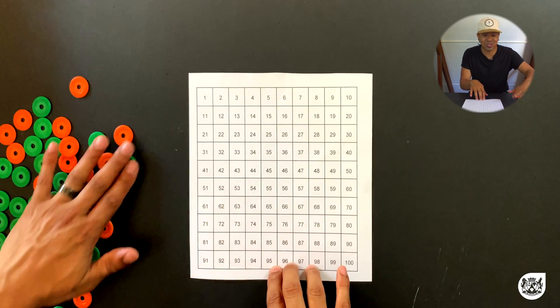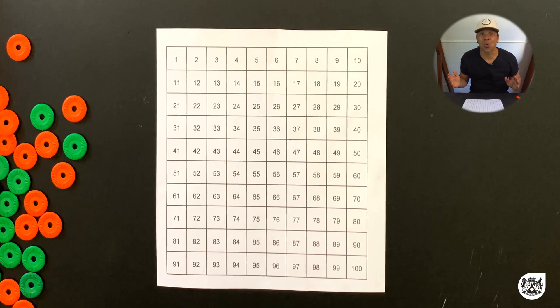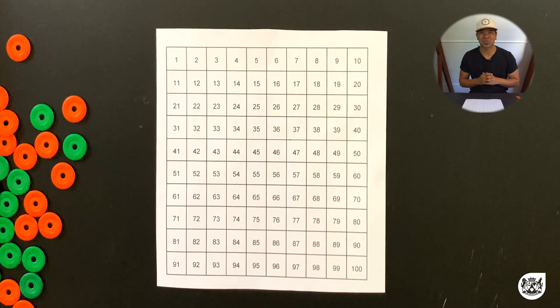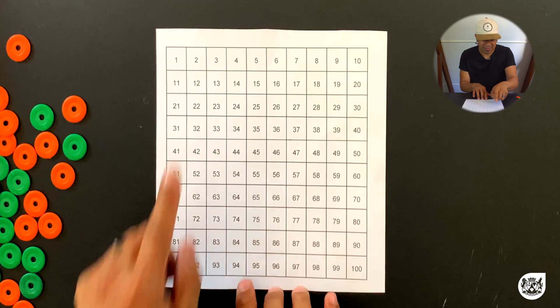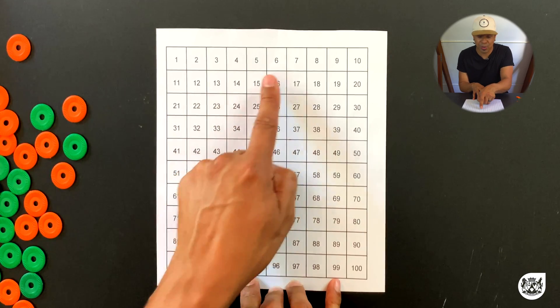So let's count in twos using the number grid and let's say we're going to count up until 44. Let's go, and please count with me.